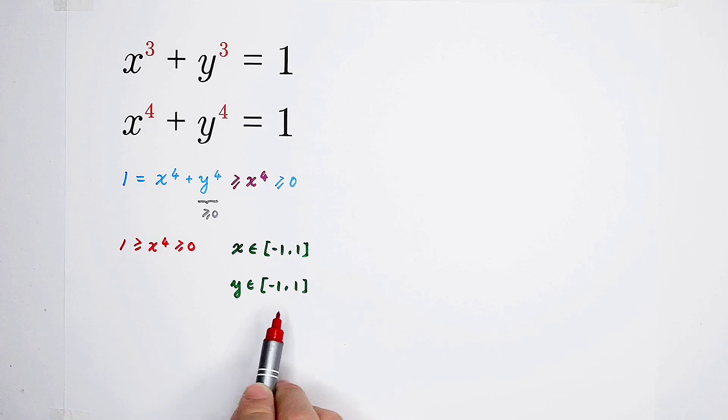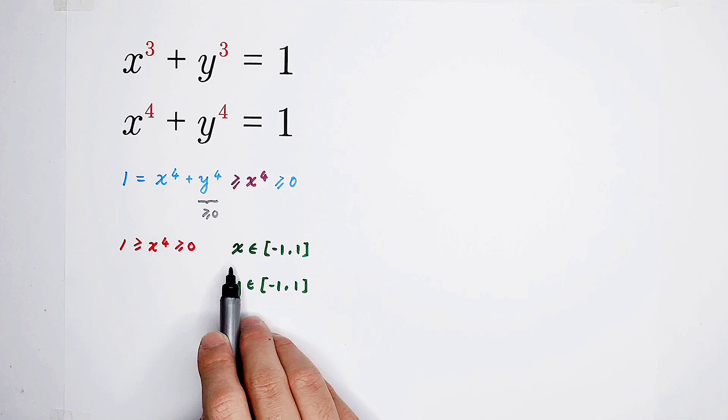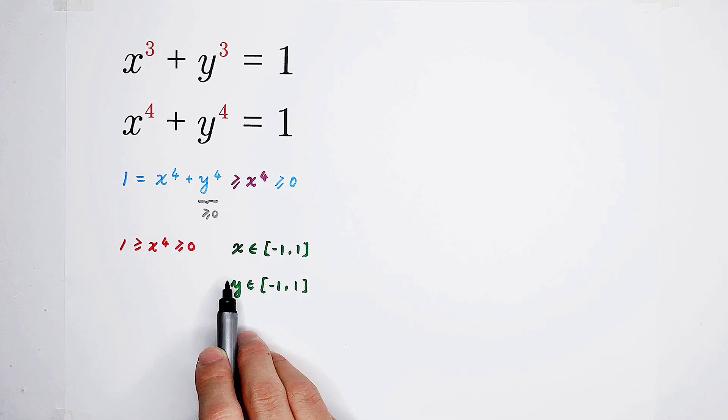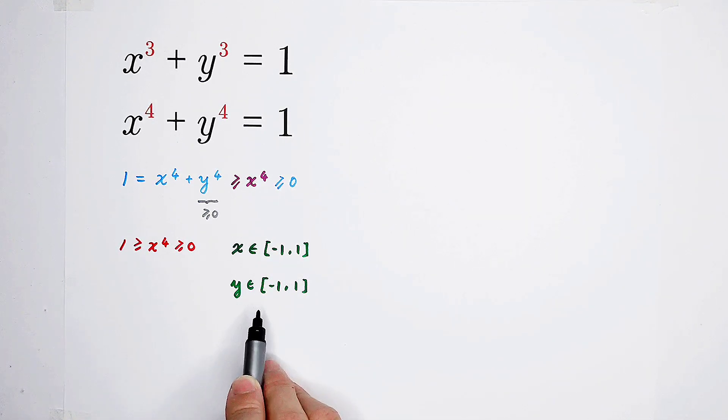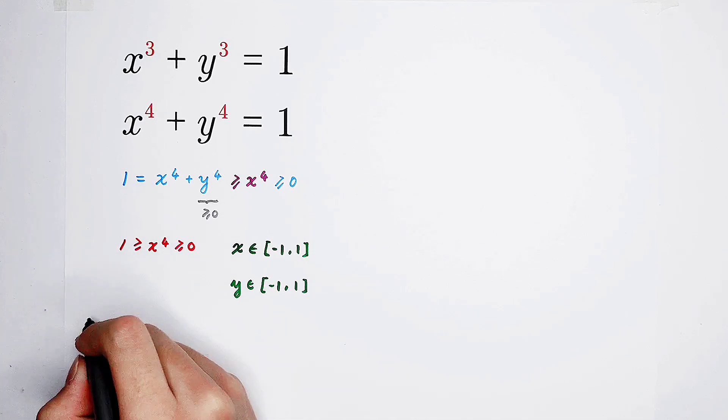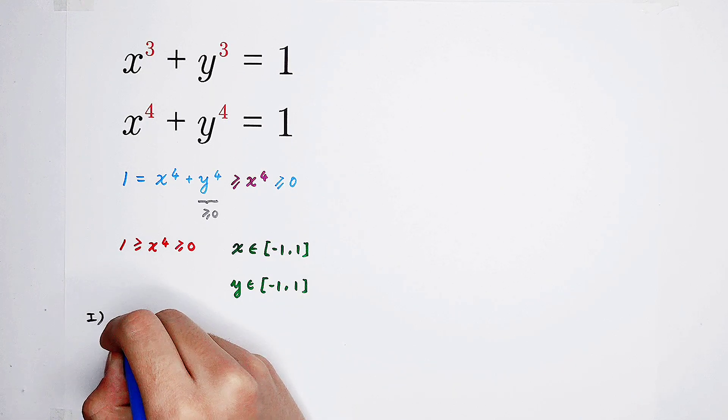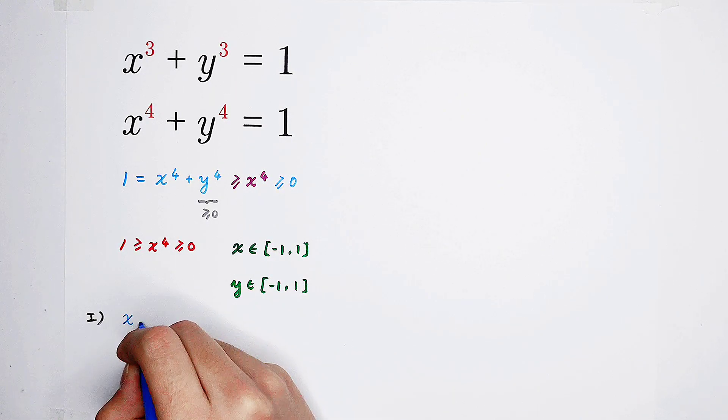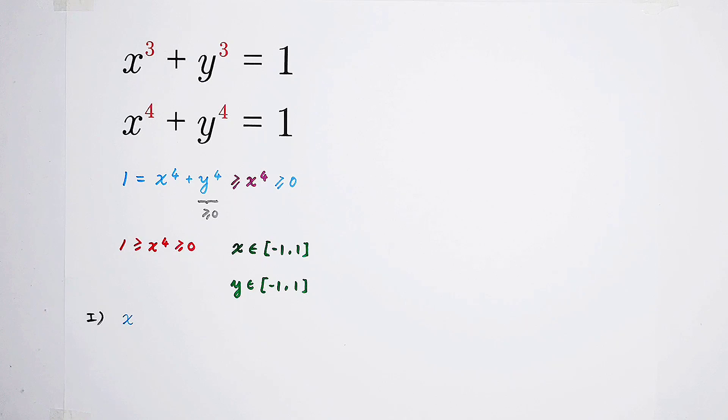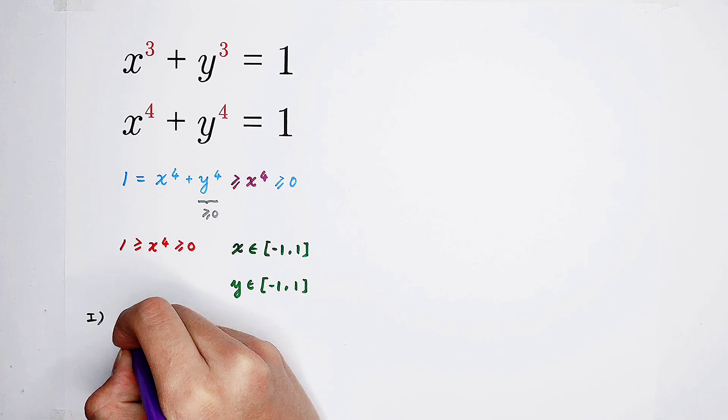Maybe we can firstly inspect the borders. Of course, we can check the solution pairs when x equals negative 1, x is 1, y is negative 1, y equals 1. And this is called the first case. I'm going to separate the steps into two cases. The first case, the special values. Of course, I'm going to change. Yes, purple.